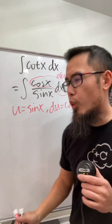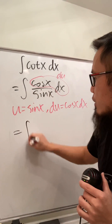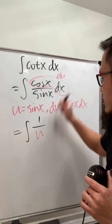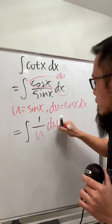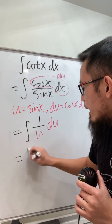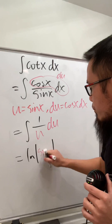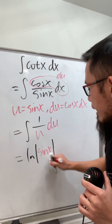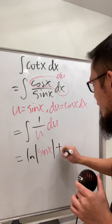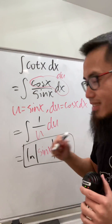We can take this integral to the u world right away. You'll see this is just the integral of 1 over u du. Integrating this, we get the natural log of the absolute value of u, and u is sine x, so just put that down. We are pretty much done — don't forget the plus c. And we are done.